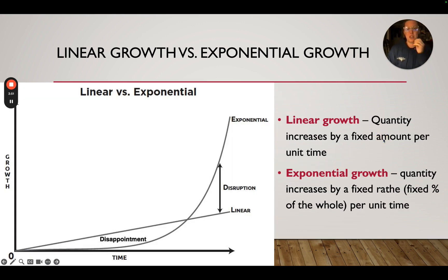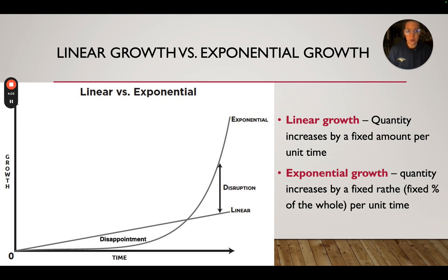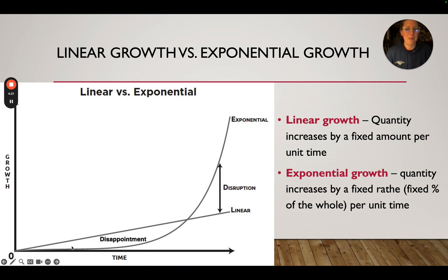It's also good to consider how populations are growing — is it in a more linear way or in an exponential way? Linear growth is where a quantity increases by a fixed amount per unit time, as shown in this graph. Exponential growth means the quantity increases by a fixed rate — a fixed percentage of the whole — per unit time.